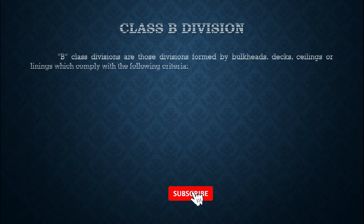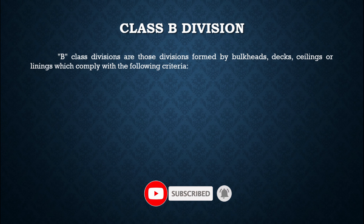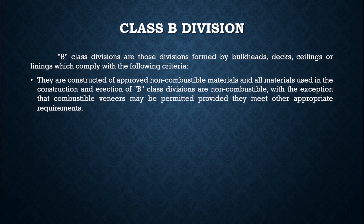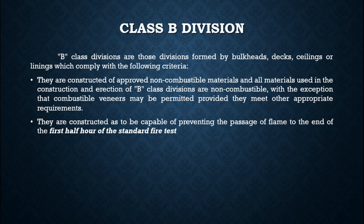Class B divisions are those formed by bulkheads, decks, ceilings, or linings which comply with the following criteria: they are constructed of approved non-combustible material, and all materials used in the construction and erection of Class B divisions are non-combustible, with the exception that combustible veneers may be permitted provided they meet other appropriate requirements. They are constructed so as to be capable of preventing the passage of flame to the end of the first half hour of the standard fire test — compared to one hour for Class A divisions.